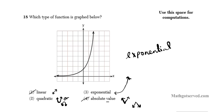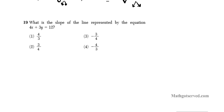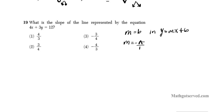Number 19 says, what is the slope of a line represented by the equation 4x plus 3y equals 12? Now there are two methods for finding the slope. The slope m equals the coefficient in the y equals mx plus b form — known as slope-intercept form. Also, m equals negative A over B in the Ax plus By equals C form, known as standard form.